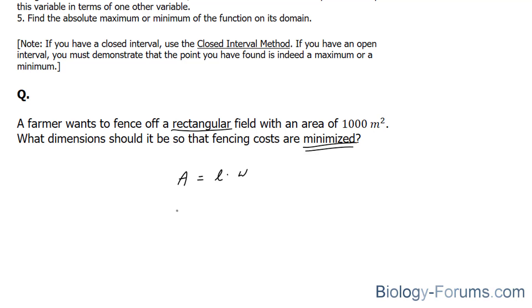And we also know that the perimeter of a rectangle is equal to 2 times the length plus 2 times the width. We can replace this variable with 1,000. So we have 1,000 is equal to length times the width.